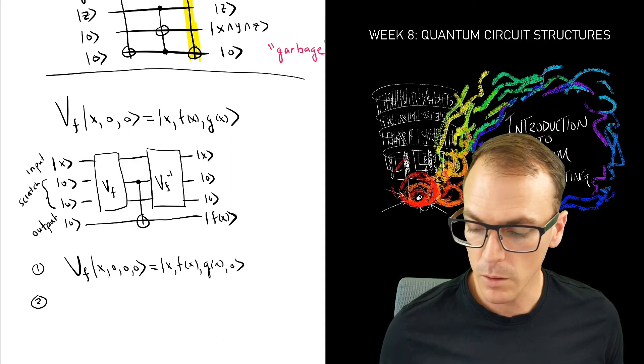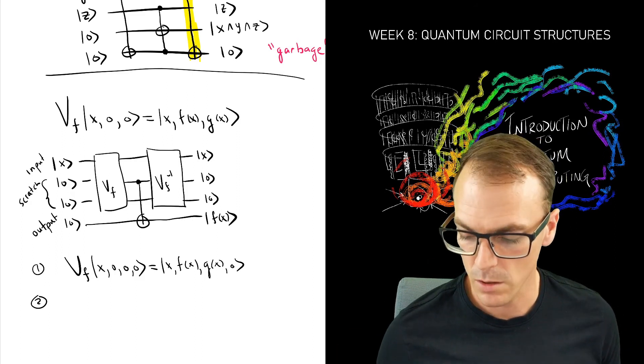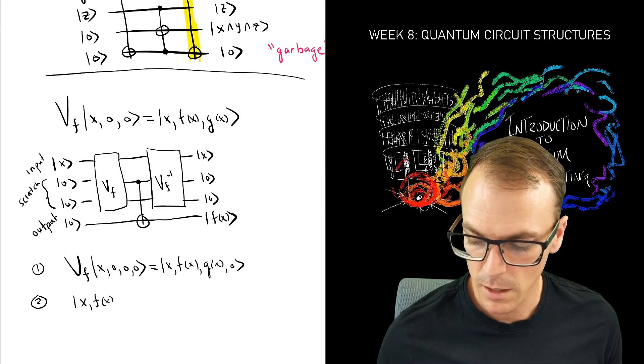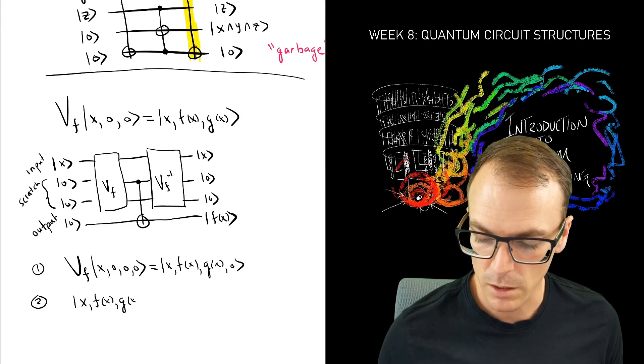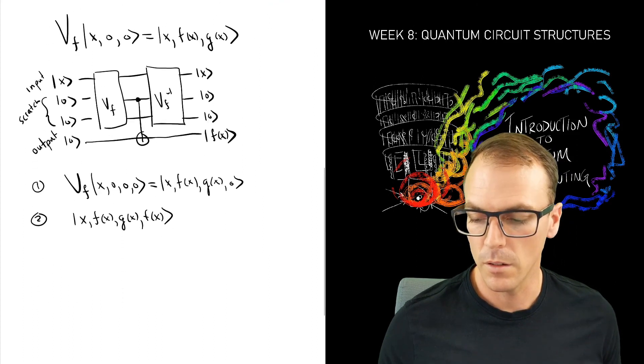And now we have a CNOT between the second and last register. So at this point, we end up with x, f of x, garbage, and a copy of f of x. Very good.